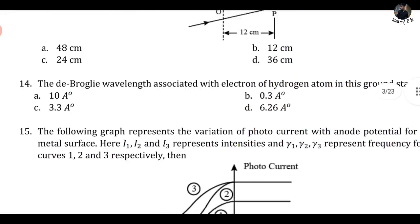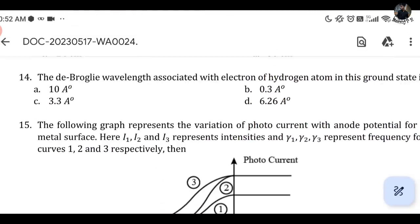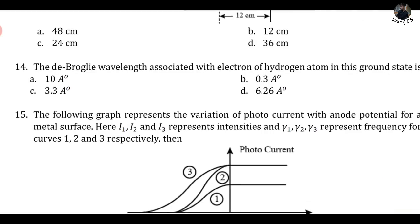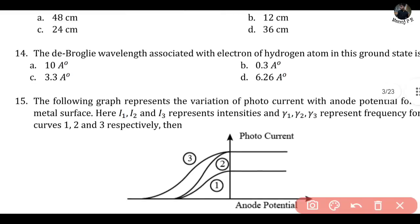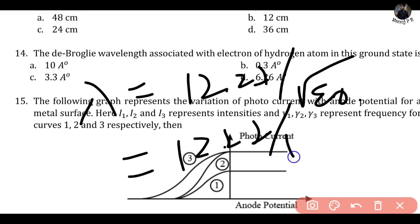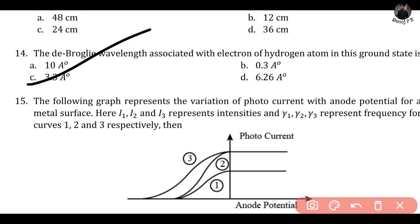Next, the 14th question: the de Broglie wavelength associated with the electron of a hydrogen atom in the ground state. The formula is λ = 12.27 / √E. The energy of the ground state of a hydrogen atom is 13.6 eV — this is a standard value you should know. So λ = 12.27 / √13.6 ≈ 3.33 Å, which is option C.